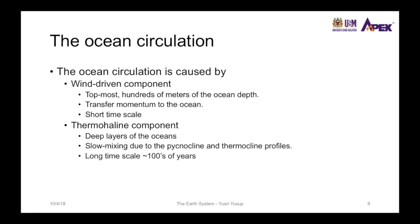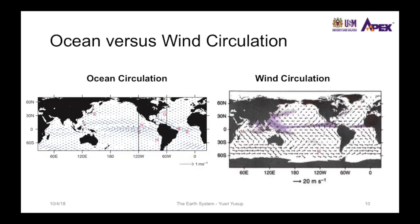Two main components drive ocean circulation throughout the world. The first is the wind-driven component, which affects the topmost surface or mixed layer ranging from a few tens to hundreds of meters depth. This component transfers momentum from the wind into the ocean, occurring on short time scales of hours to a few weeks. The similarity between ocean circulation patterns and wind circulation patterns confirms that wind drives the circular ocean circulation through this momentum transfer.